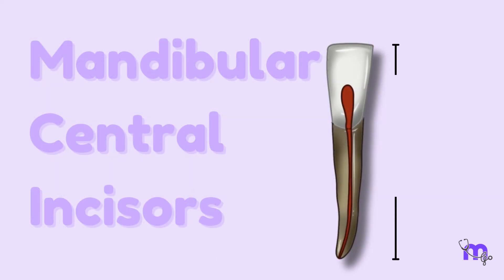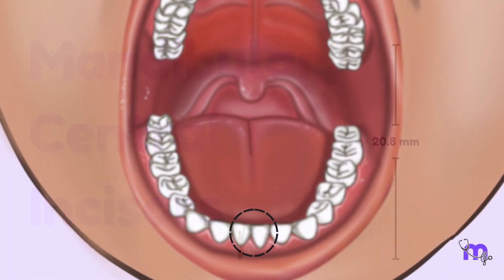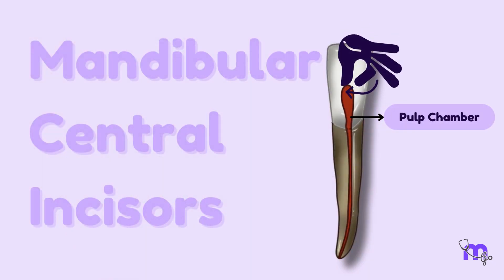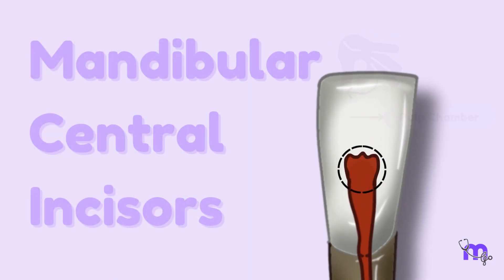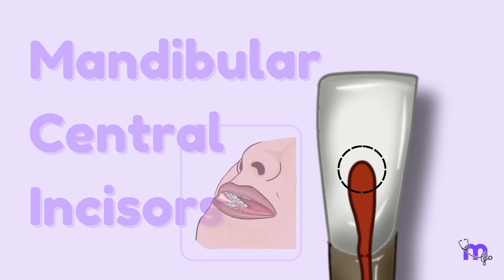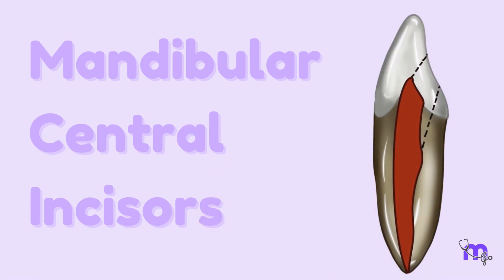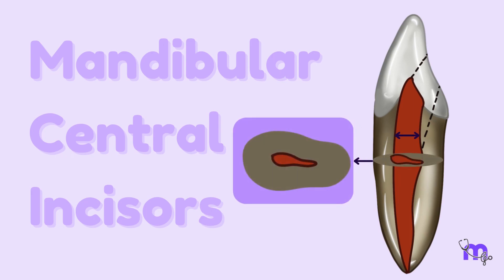With an average length of 20.8 mm, the mandibular central incisor is the smallest tooth present in the arch. The pulp chamber is both small and flat mesodistally. It has three distinct pulp horns that disappear with age due to continuous masticatory stimulation. However, the chamber is wide labiolingually and ovoid in cross-section, which tapers incisally.